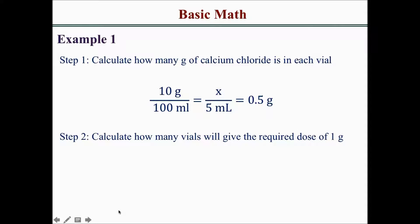Then you just want to set up a proportion to see how many vials you would need to get 1 gram. Since each vial is 0.5 grams, you'll need 2 vials to get 1 gram.